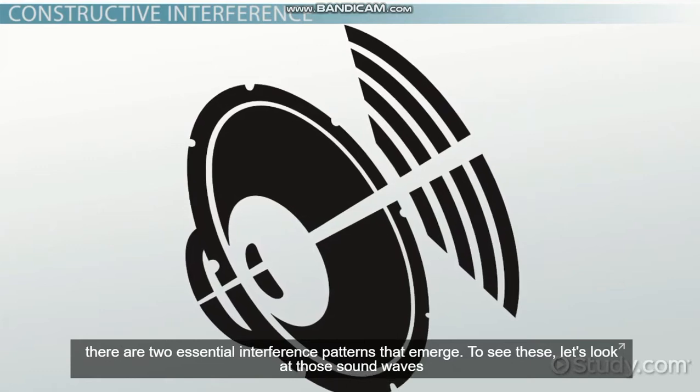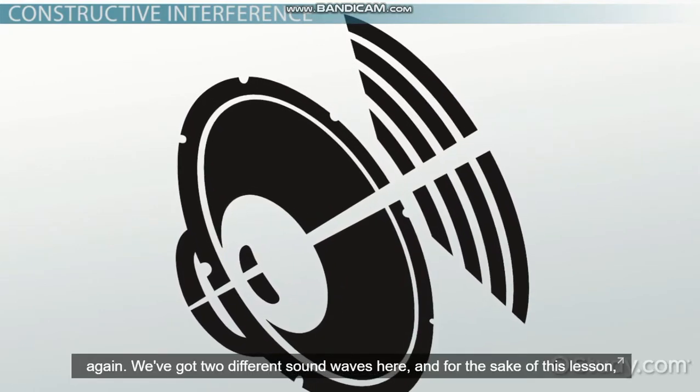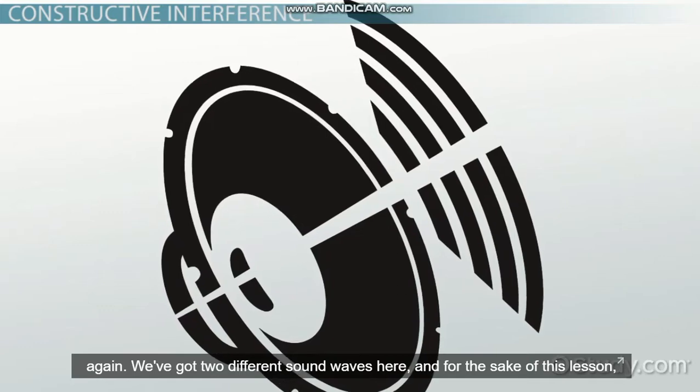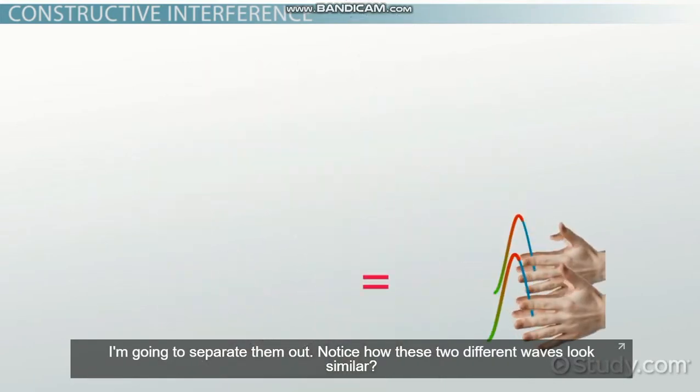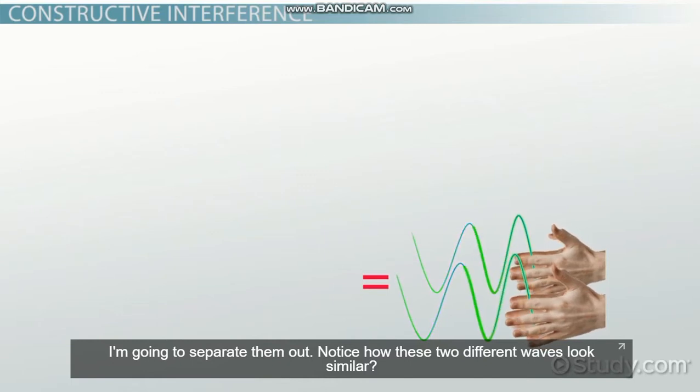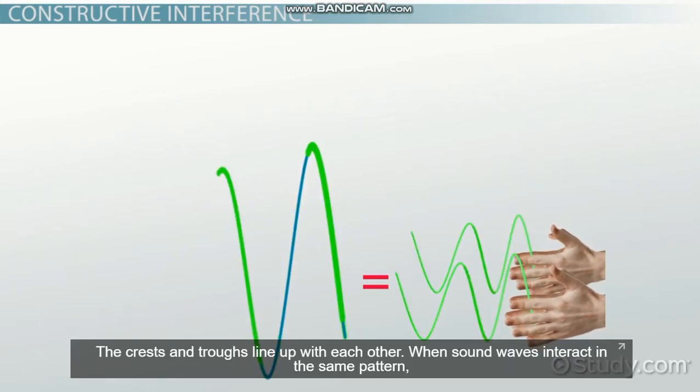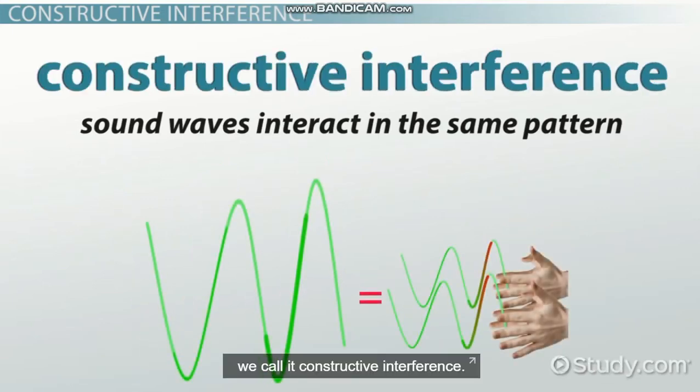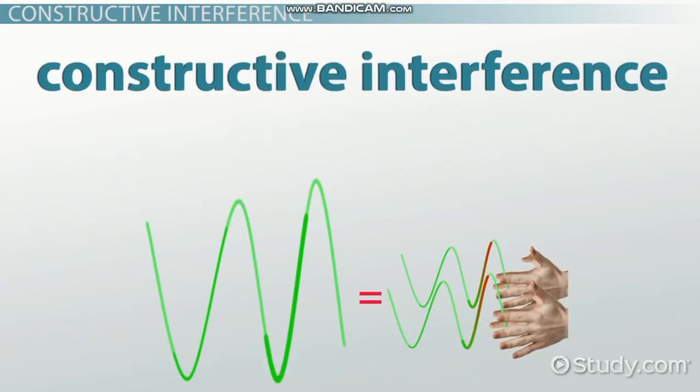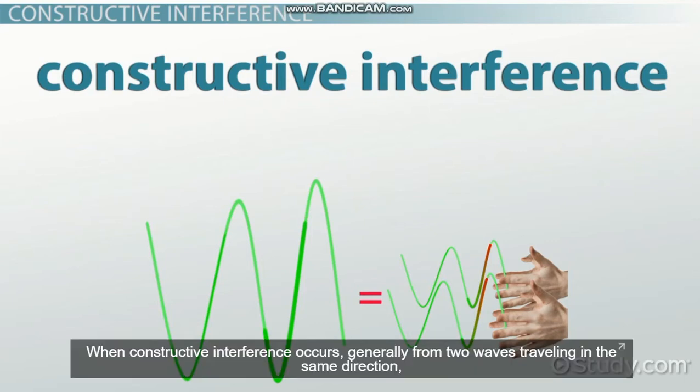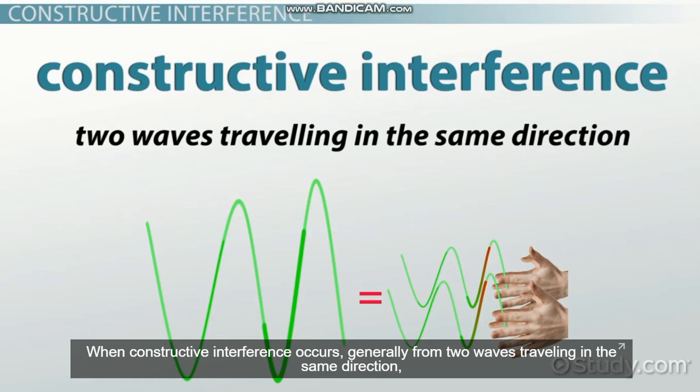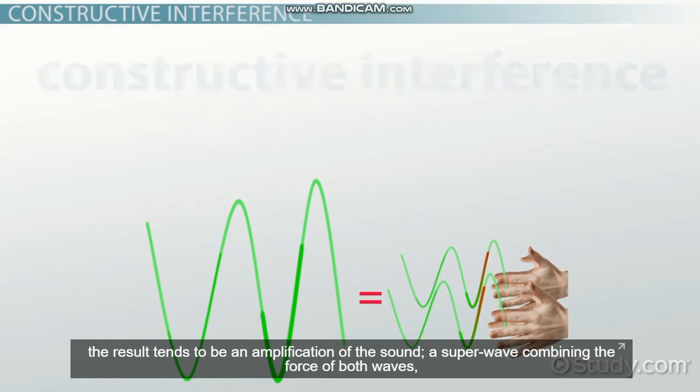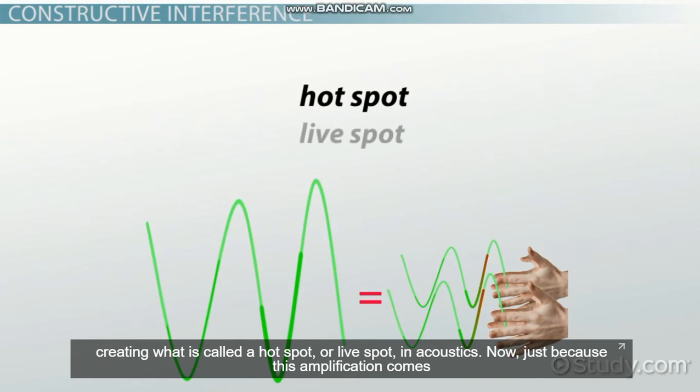Let's look at those sound waves again. We've got two different sound waves here, and for the sake of this lesson, I'm going to separate them out. Notice how these two different waves look similar—the crests and troughs line up with each other. When sound waves interact in the same pattern, we call it constructive interference. When constructive interference occurs, generally from two waves traveling in the same direction, the result tends to be an amplification of the sound—a super wave combining the force of both waves, creating what is called a hotspot or live spot in acoustics.